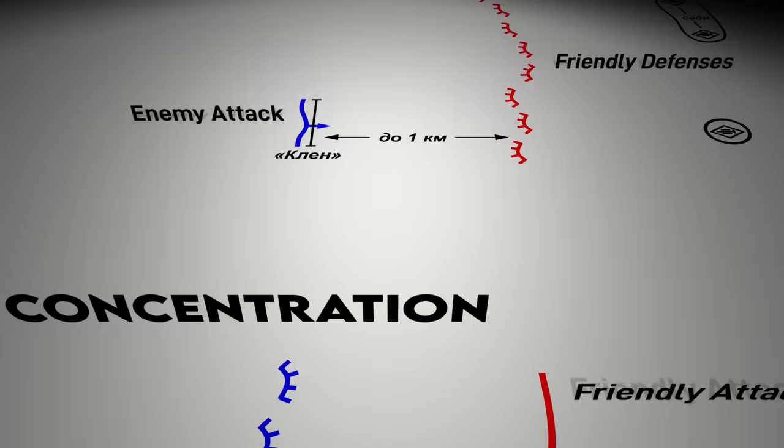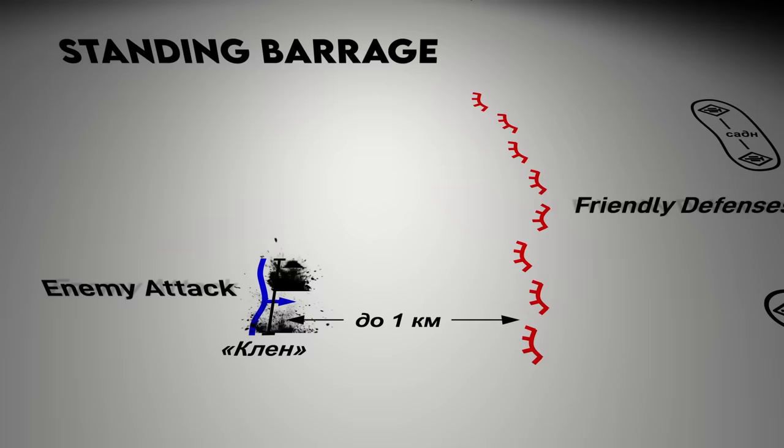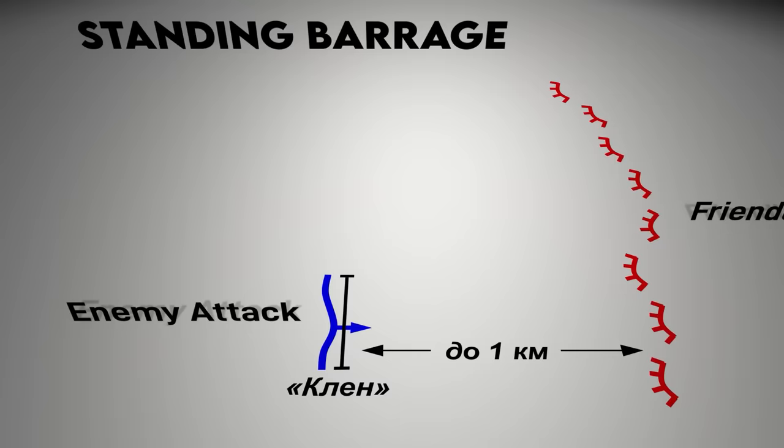A standing barrage is planned against the enemy's likely avenue of advance. The aim is to halt an enemy's advance in a defensive situation rather than destroy the target. It may be planned as a precautionary, unobserved fire mission to allow for an attack force time to consolidate gains and transition to the defense. To allow for sustained fire, this type of mission is normally conducted by tube artillery.